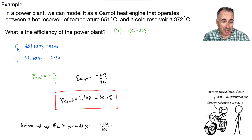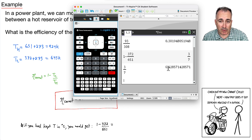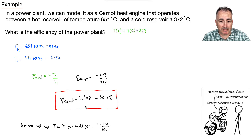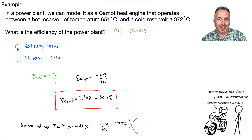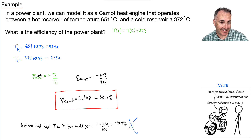Just to show you what happens if you had kept temperatures in Celsius instead of converting: you'd do 1 minus 372 over 651, and get about 42.9% — which would be wrong. So do keep your temperatures in Kelvin. There's a great xkcd joke: 'Check out my new Carnot cycle.' 'Neat, how fast does it go?' 'It depends how cold it is outside.' Because the efficiency of a Carnot cycle depends on the cold reservoir temperature, as well as the hot.